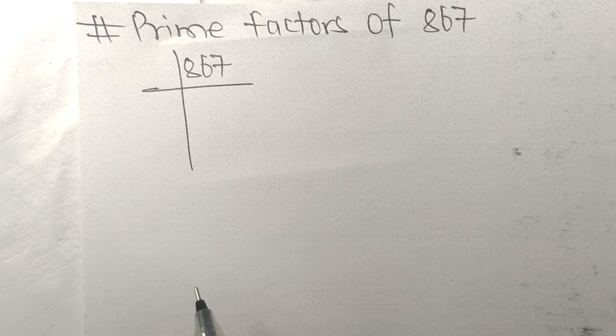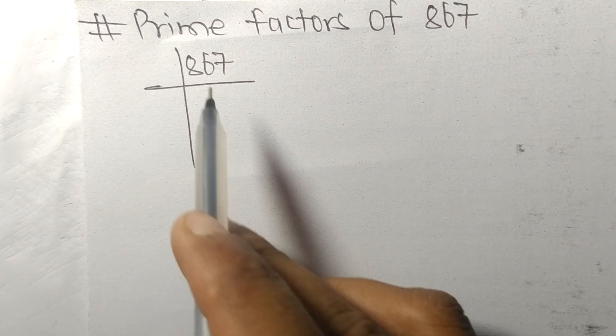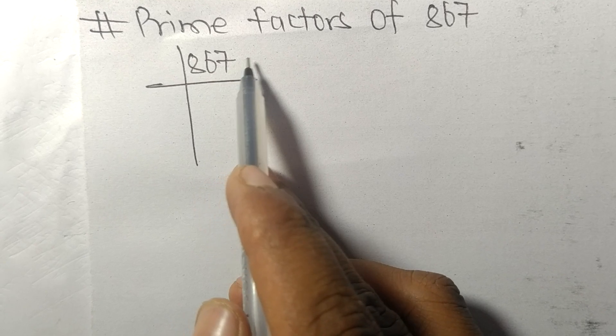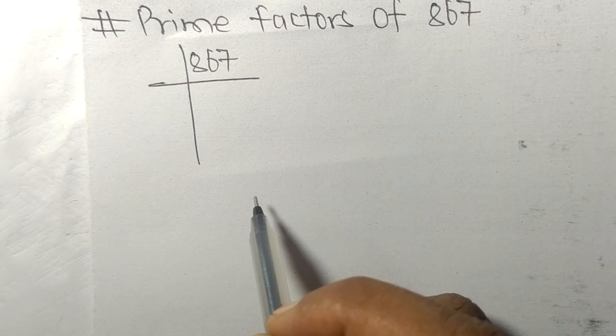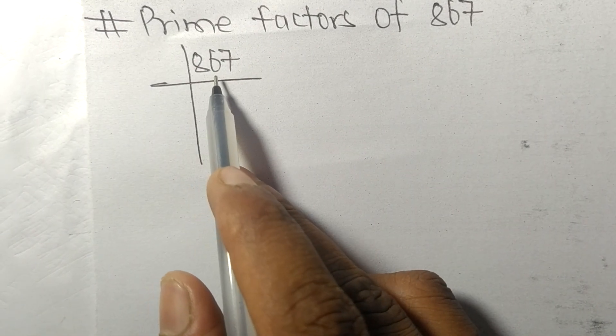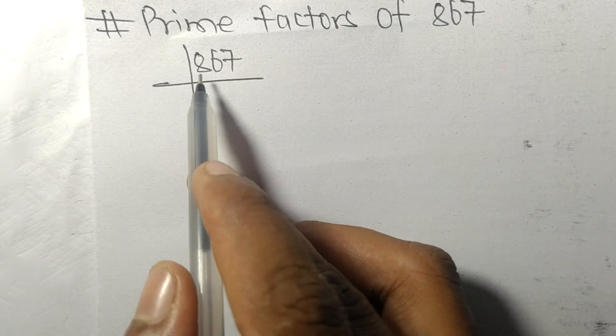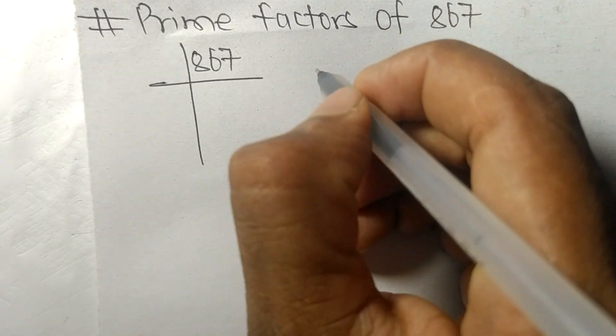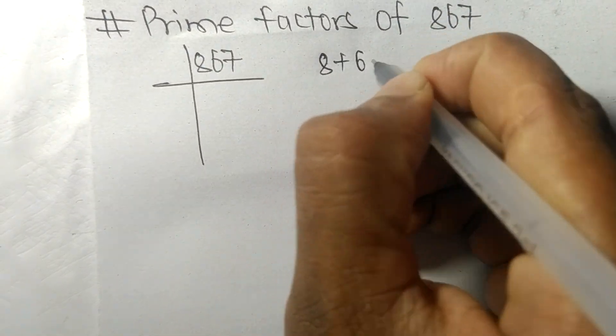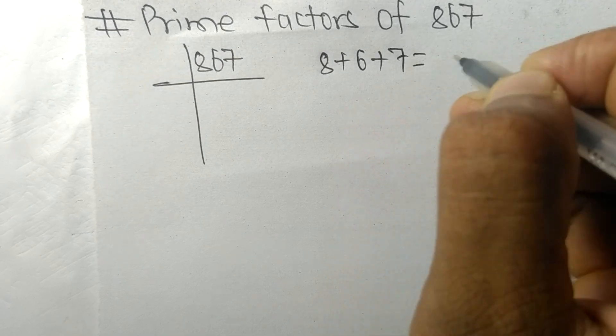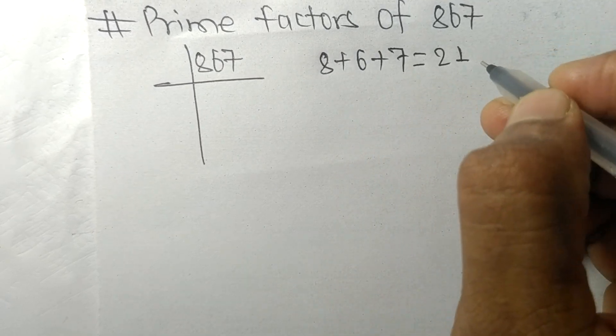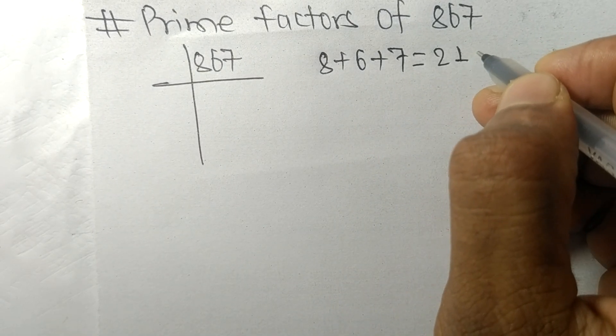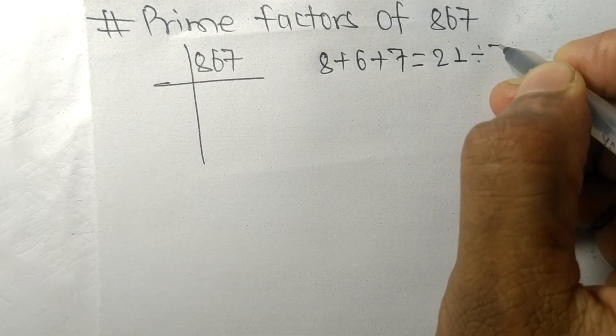Today in this video we shall learn to find the prime factors of 867. When we add all these digits, that is 8 plus 6 plus 7, we get 21, and 21 is exactly divisible by 3.